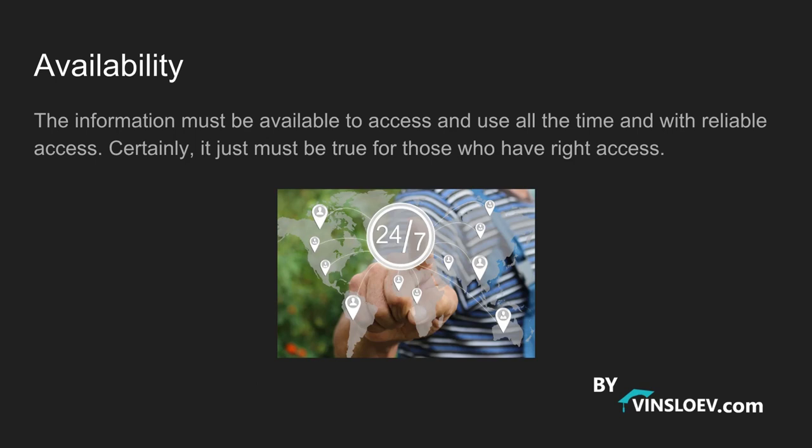The first principle is availability. The information must be available to access and use all the time with reliable access — but only for those who have the right access. Availability means that our data and our resources must be available all the time, so we need to take protective measures to assure that this principle is met.